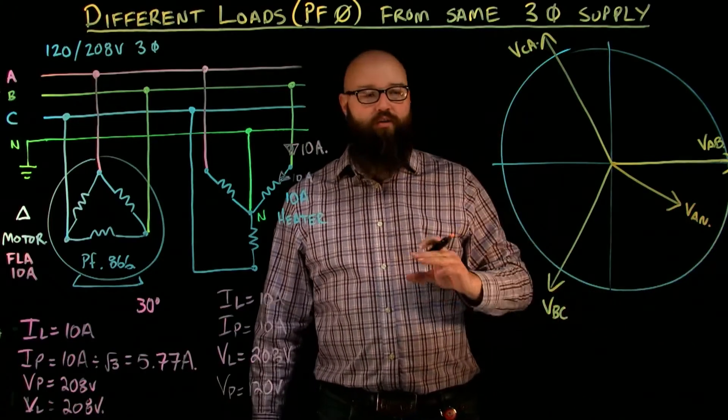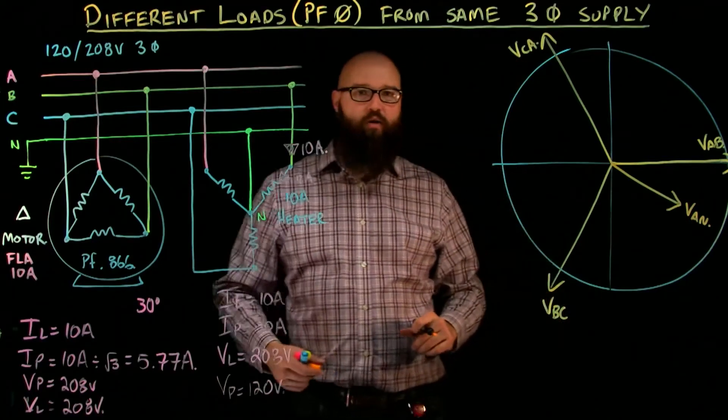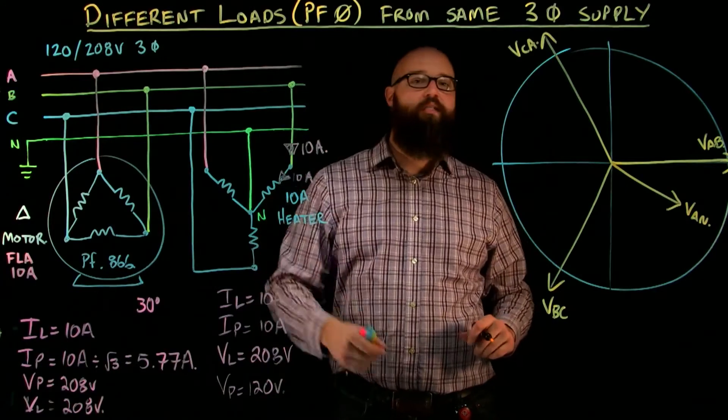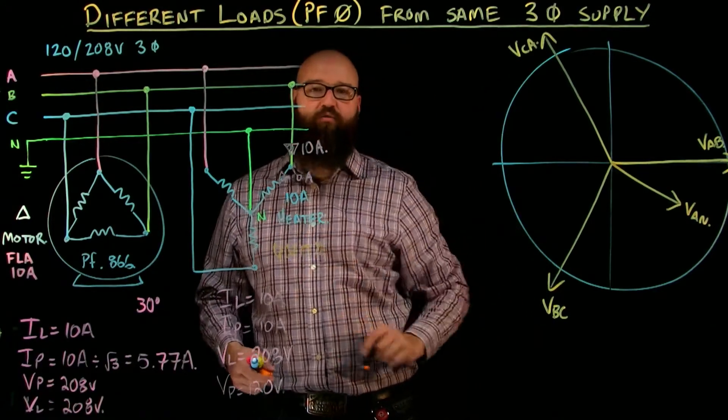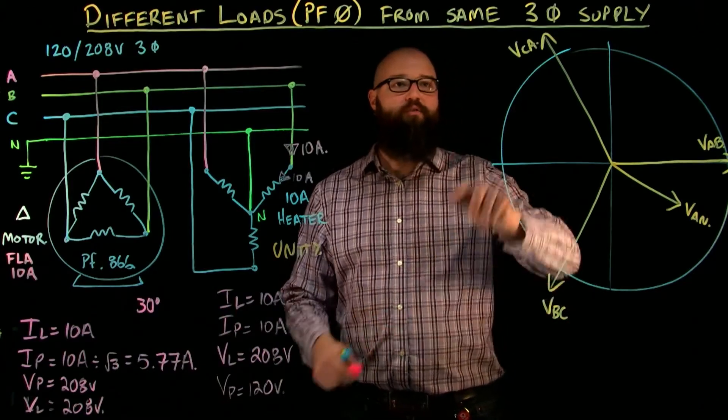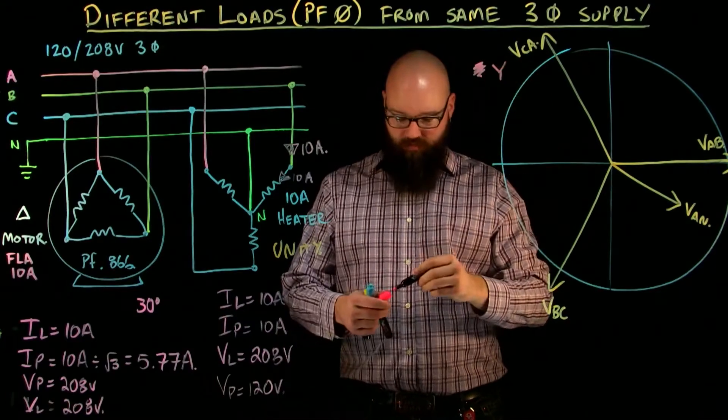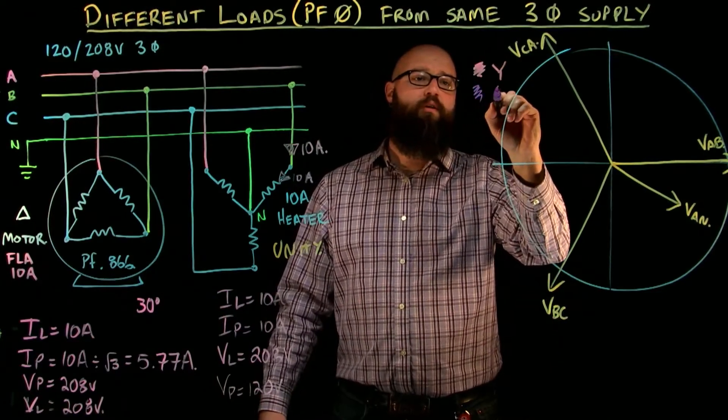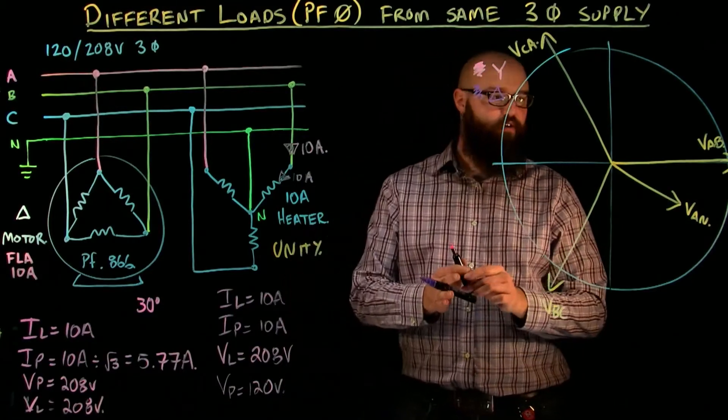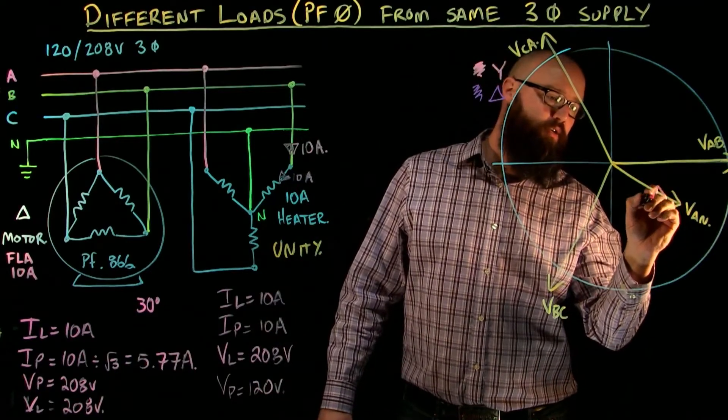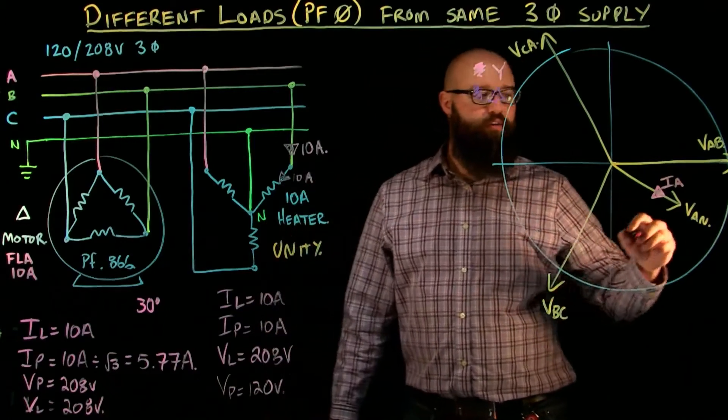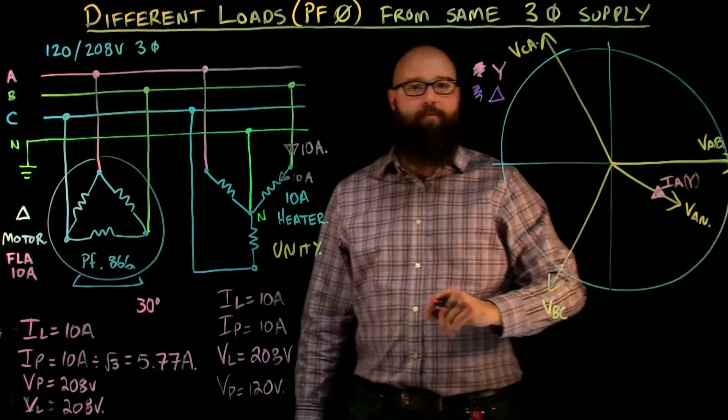Now let's take a look at the currents. Let's look at the Y current first, that's probably the easiest. It's one value, line is equal to phase. I phase is 10 amps and it is a unity load, it's a heater. This is unity which means power factor of 1 which means phase current is in phase with phase voltage. So right here we're gonna say that pink is my Y current and purple is my delta current. Let's get that phase current on our Y system, 10 amps right around here. There's Ia and we're gonna call this Ia of our Y system. That's it, the Y current done.